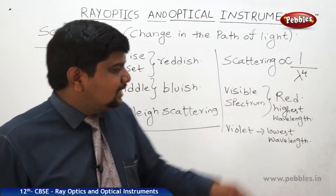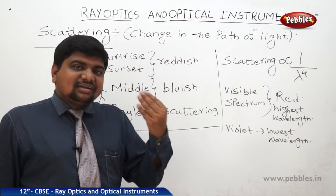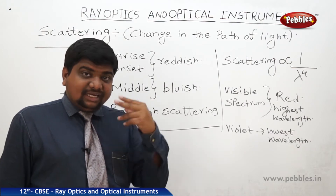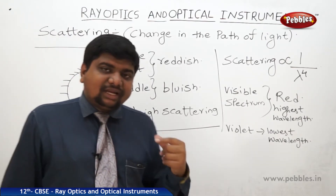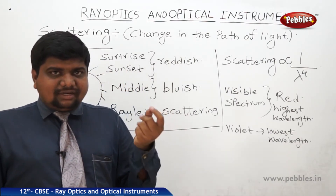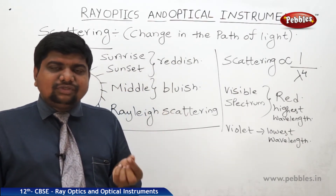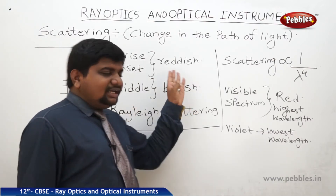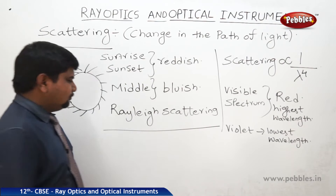The reason is that our eyes are not sensitive to identify the violet color. That is why violet and indigo are not perceived. So, next to indigo, the visible color is blue. That is why for most of the day, the sky appears to be blue.